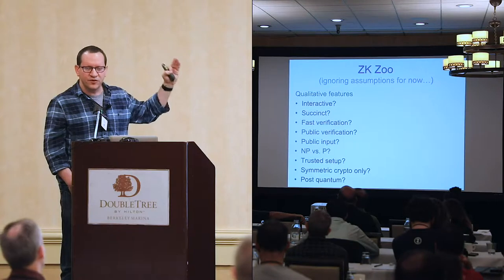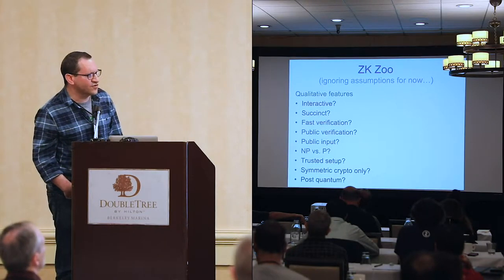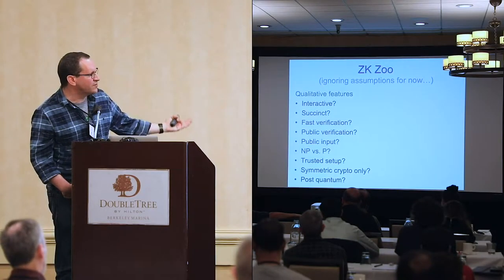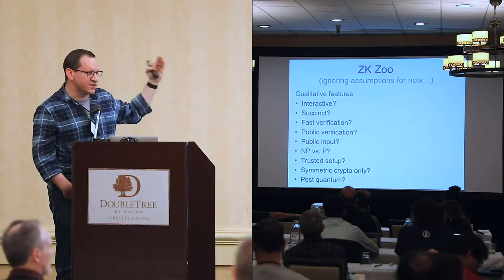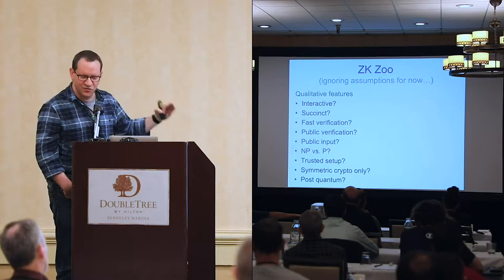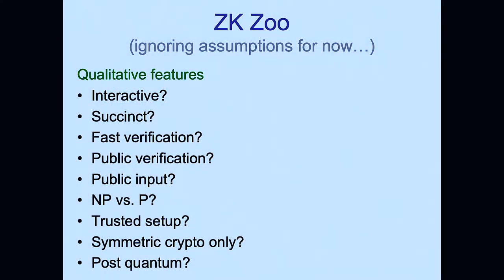There is enormous breadth in the goals of zero-knowledge proofs. Many design criteria exist: interactive vs. non-interactive, succinct vs. non-succinct, fast verifier or not, public vs. designated verifier, public or committed input, NP vs. polytime statements, trusted setup or not, public-key crypto assumptions, post-quantum security. These qualitative features must be specified to know which zero-knowledge proof system is best for a given application.